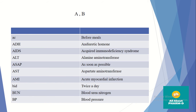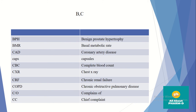AST means Aspartate Aminotransferase — basically liver enzymes. AMI means Acute Myocardial Infarction. BID means twice a day. BUN means Blood Urea Nitrogen. BP means Blood Pressure. BPH is Benign Prostatic Hypertrophy.